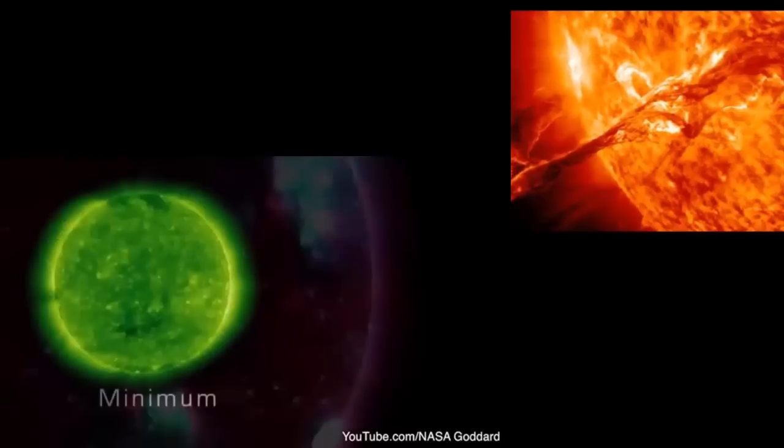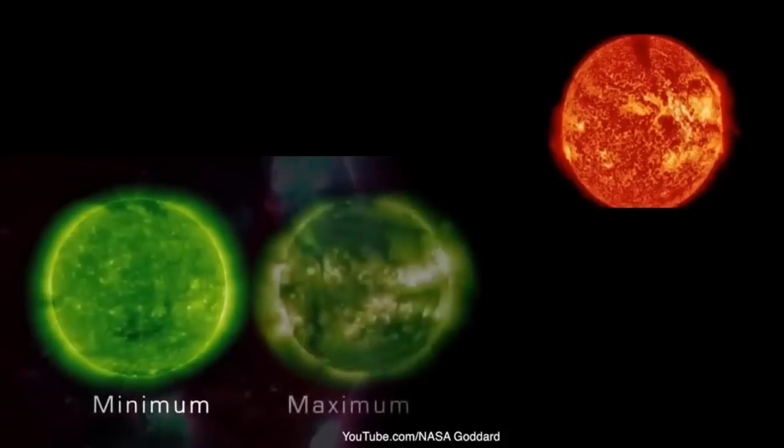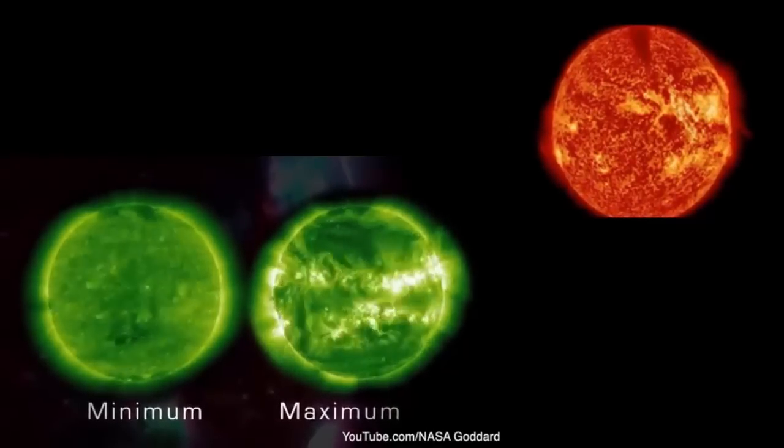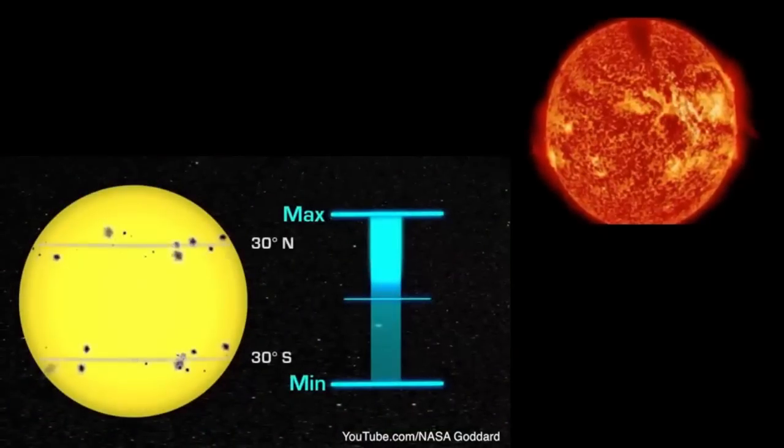Solar minimum represents a period of time when sunspot numbers are relatively low, and solar maximum represents a period when sunspot numbers are relatively high. During this cycle, the location of the sunspots also changes. They are at middle latitudes during solar maximum and move closer to the equator as the Sun approaches solar minimum.